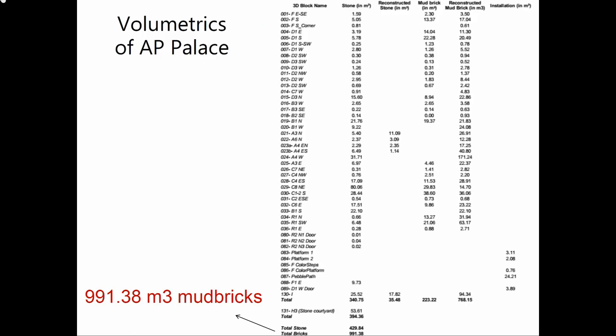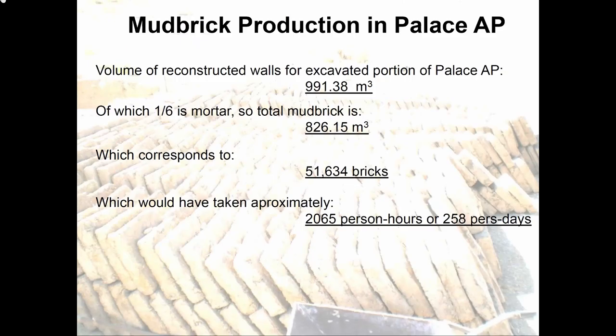My use of the 3D model is really not as an image — it's to calculate the materials that have been used. The total number of mud bricks used to construct the palace is nearly a thousand cubic meters. That's the estimated reconstruction, but the 3D model actually gives you also the exact measurements of the archaeological record, and I've added on top a minimum volume for the palace itself. Putting this information together allows us to say that around 2,000 person hours were needed to make the mud bricks used in the palace.